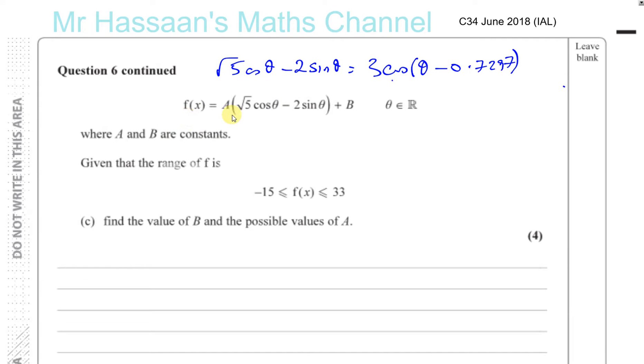It says f of x equals A times root 5 cosine theta minus 2 sine theta plus B, where theta is an element of the real numbers, and A and B are constants. Given that the range of the function f is between minus 15 up to 33 inclusive, find the value of B and the possible values of A.